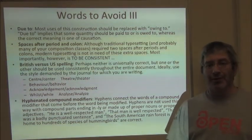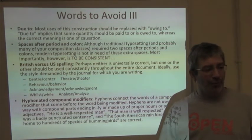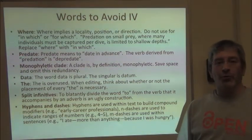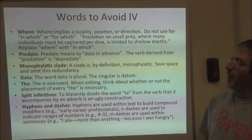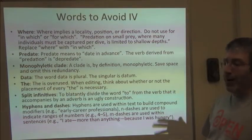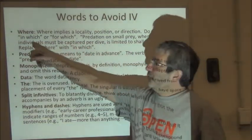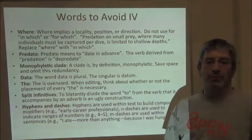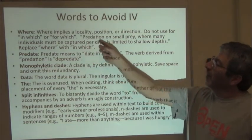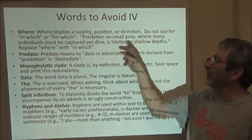That's a third set of words and problems to avoid. Here's our fourth and final list of quibbles with scientific English. The use of the word 'where' — where refers to location. Don't use it to refer to things that are better dealt with as 'in which' or 'for which.' For example, 'predation on small prey where many individuals must be captured for a dive' — that's not referring to a place.